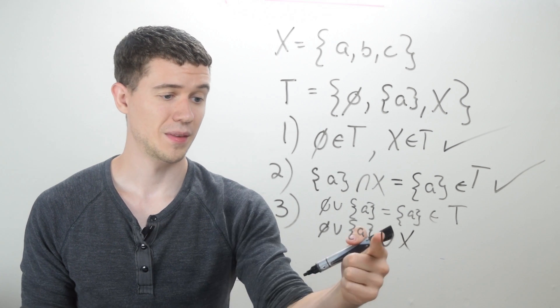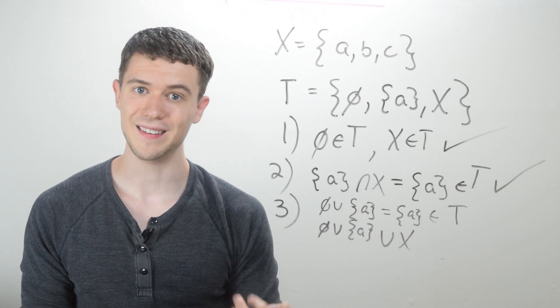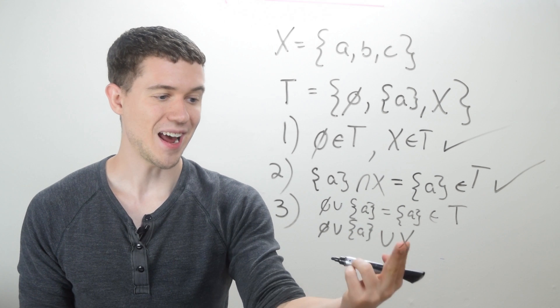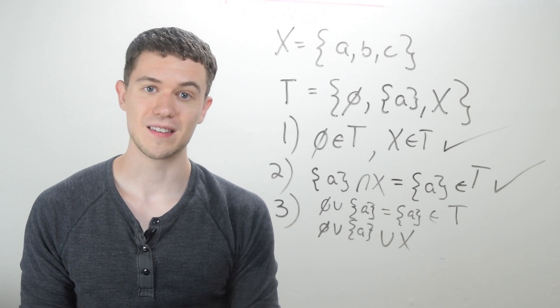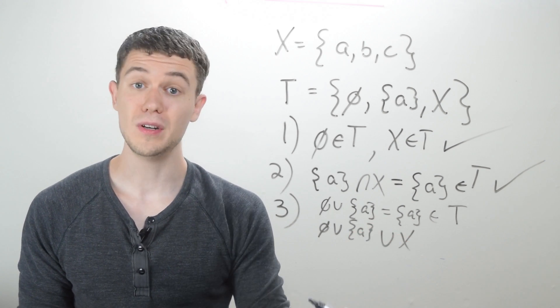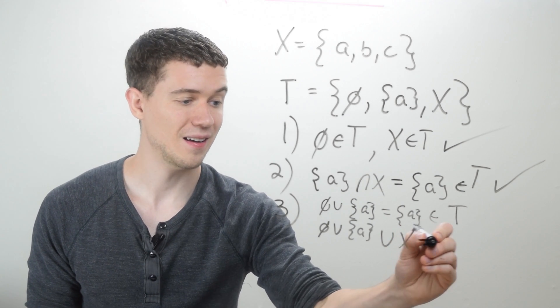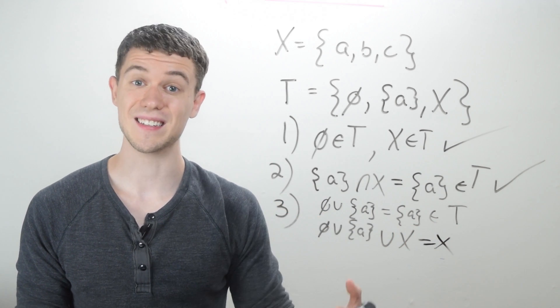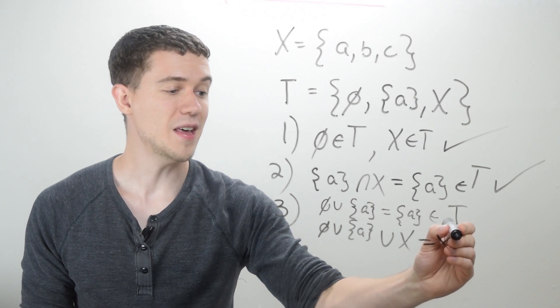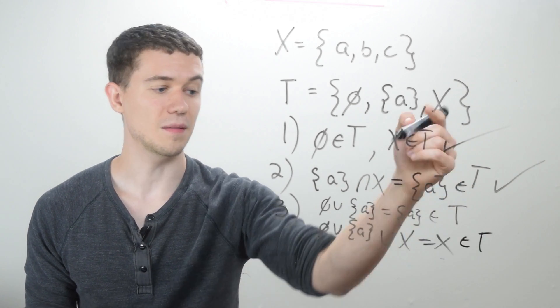Well, the empty set union with anything is just that thing. And A is already an element of X. So X union the set containing A is just X, right? Because A is a subset of X.